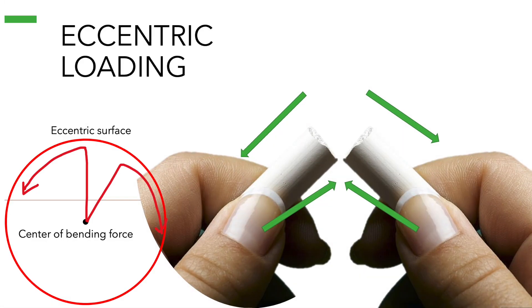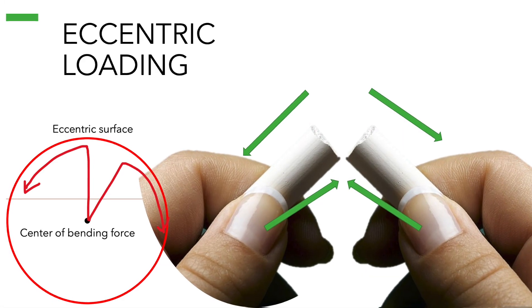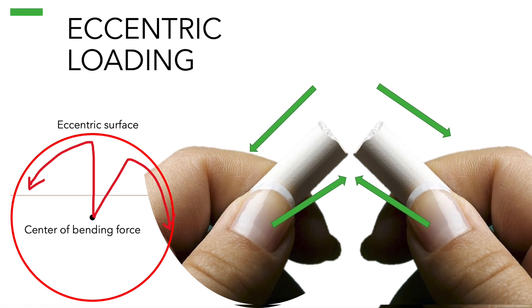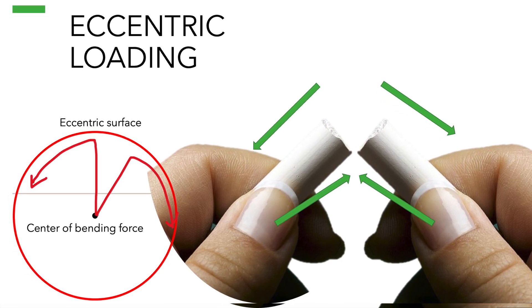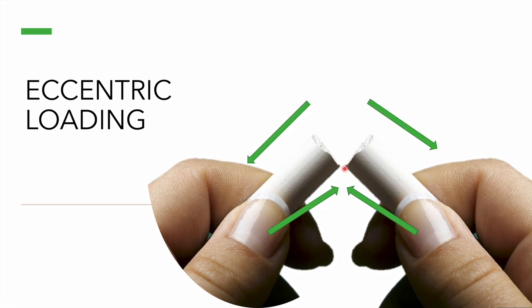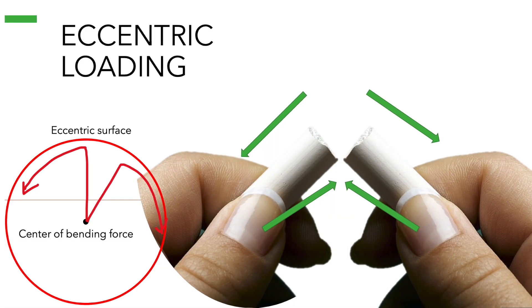So what is eccentric loading? If we take a piece of chalk and break it in two, there will be a surface that is close to the bending direction and a surface that is away from the bending direction.